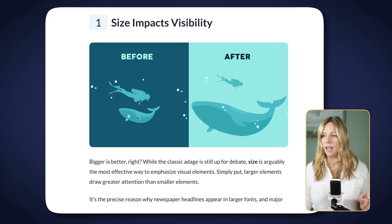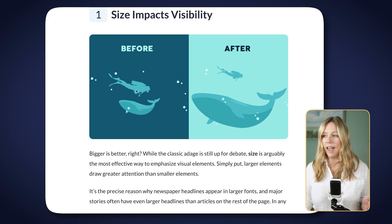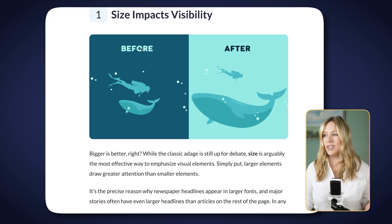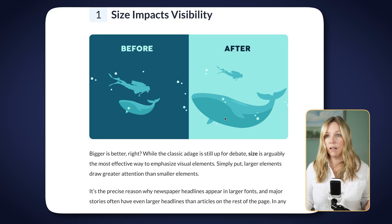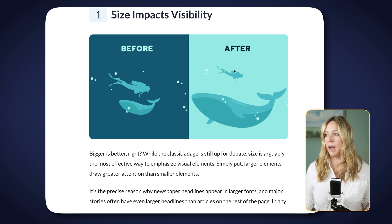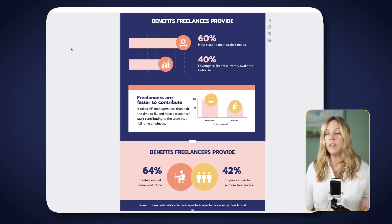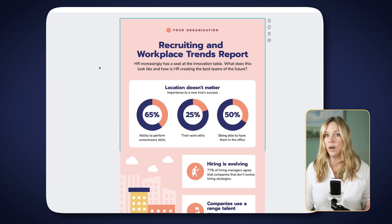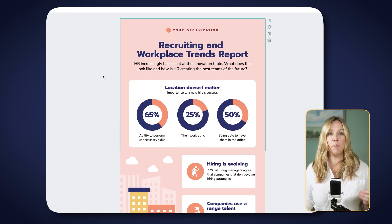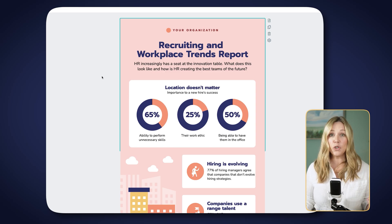Let's look at another example. If we look at this first image, the whale and the diver are essentially the same size, so neither of them stands out — I just see the word 'before.' But in the second image, with the whale much larger and the diver appropriately sized relative to the whale, I can actually follow my eye through the graphic and it makes much more sense. When we think about applying this in an infographic, we want to make sure the things meant to be seen first are seen first — with the most visual weight and the clearest cues.